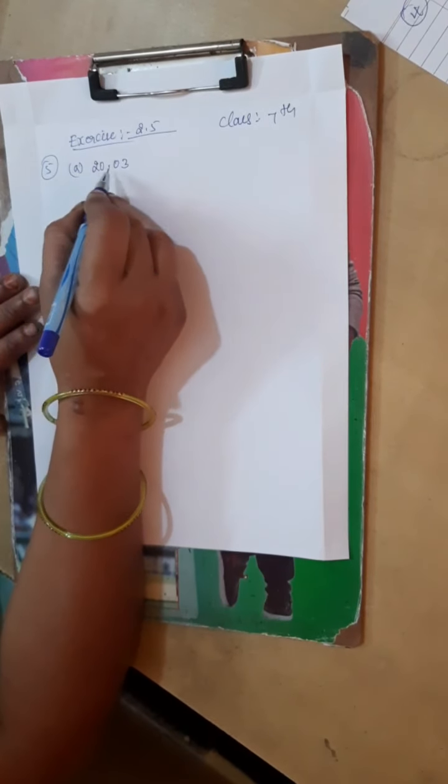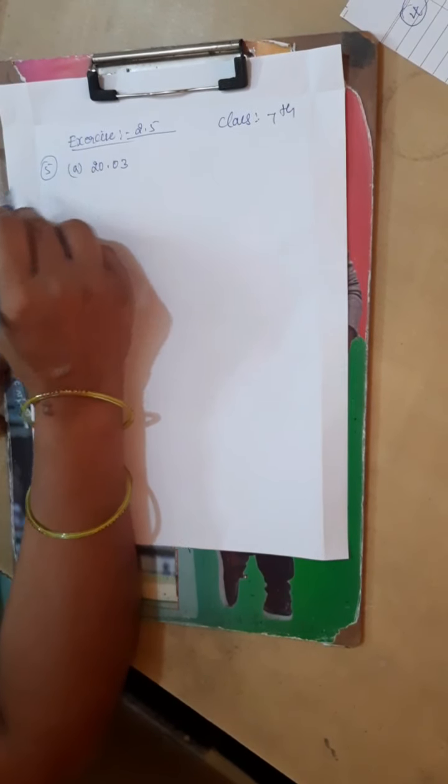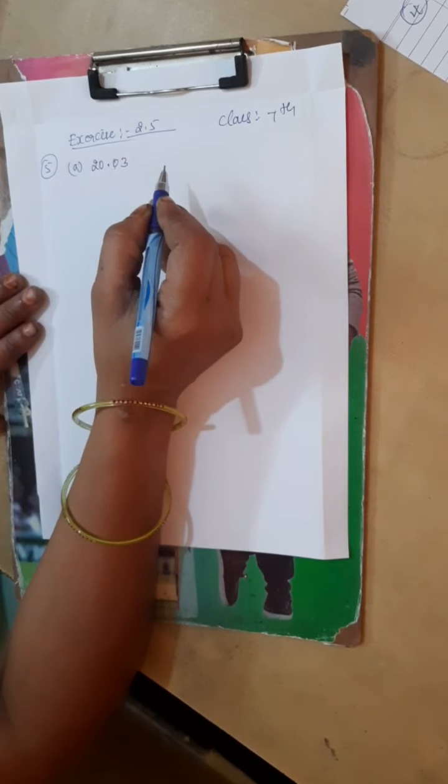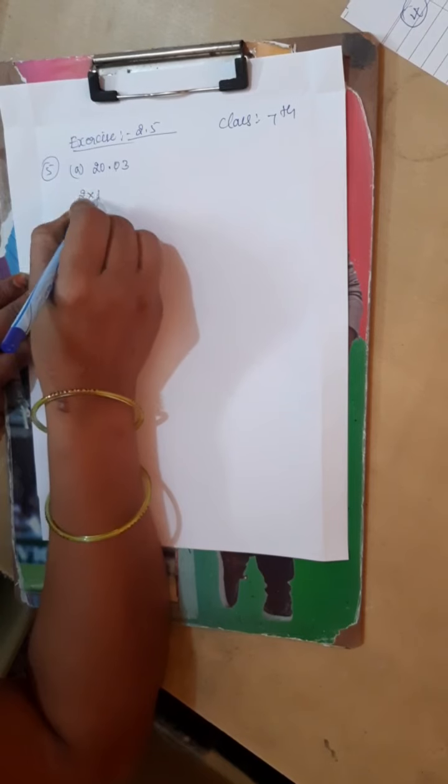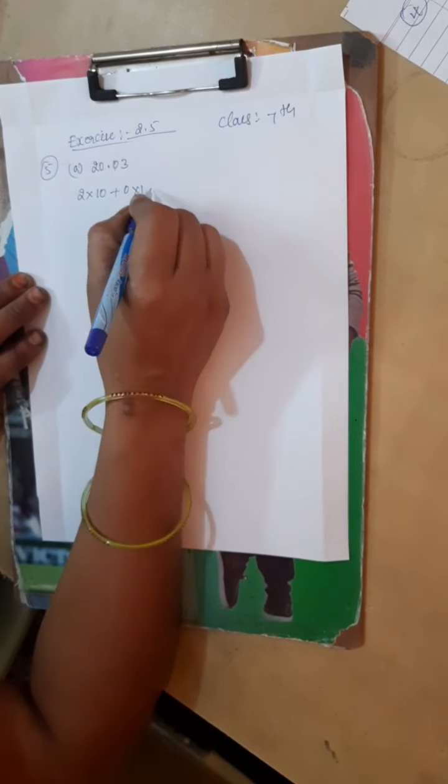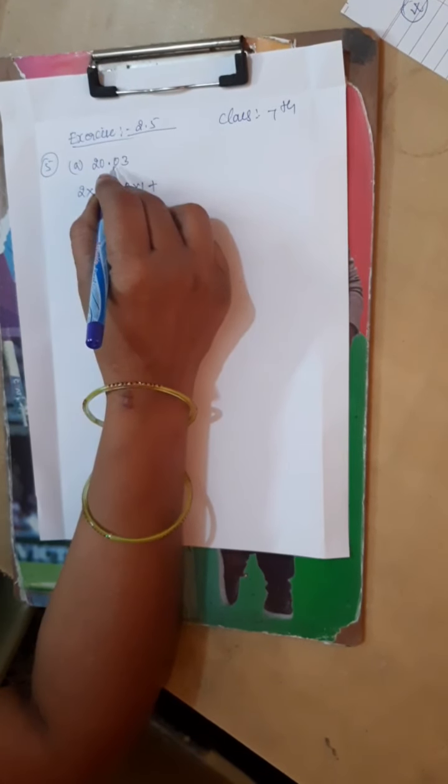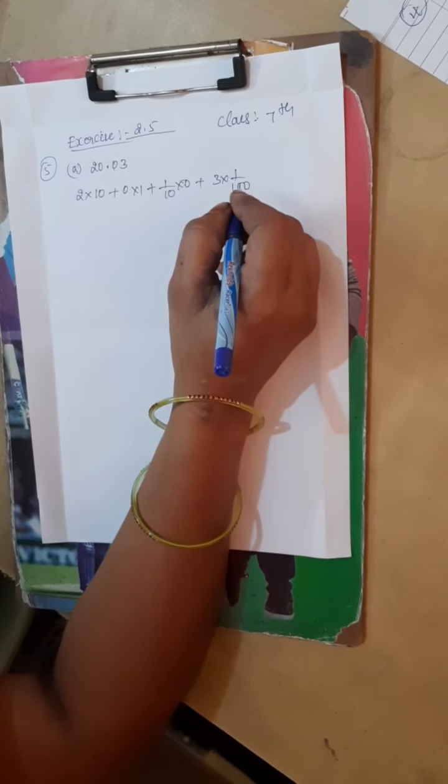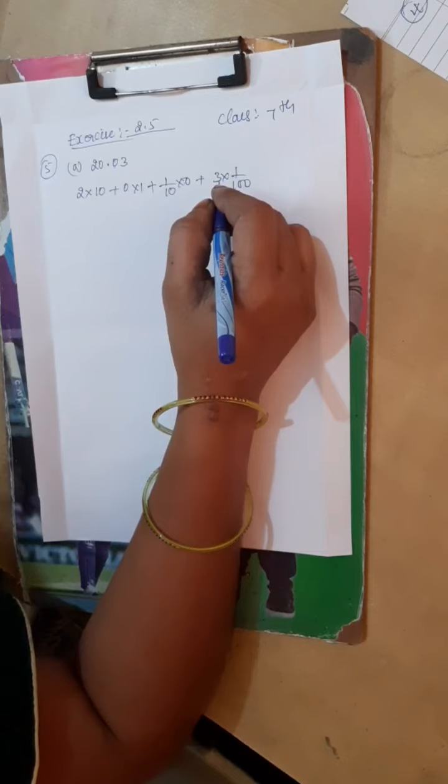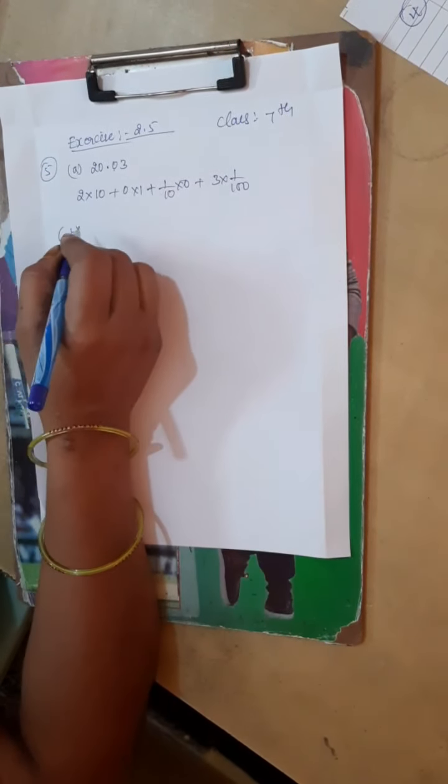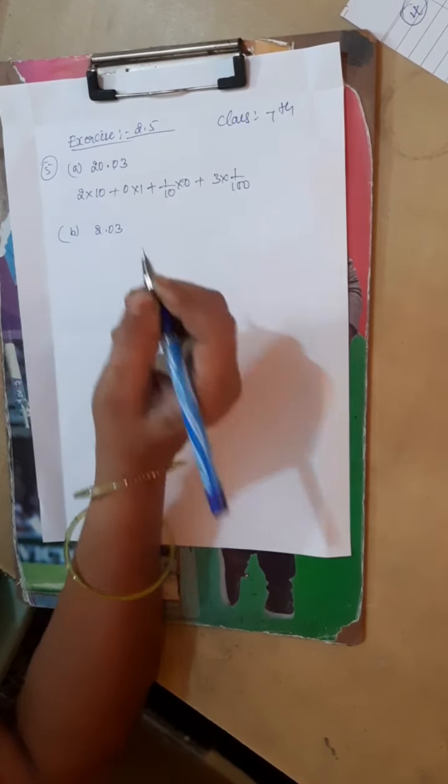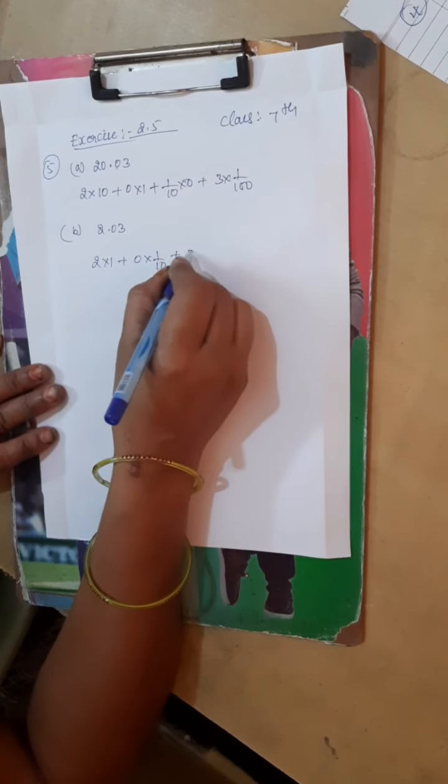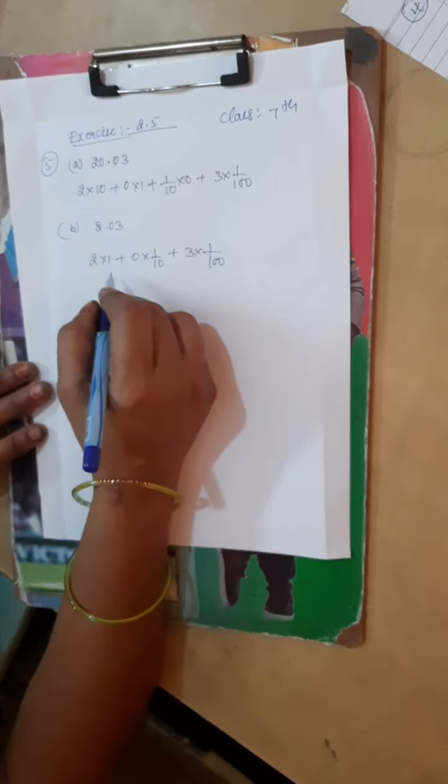Expand form number 1st main. First, 20.13. So 2 into 10 plus 0 into 1, then plus 1 into 1/10, plus 3 into 1/100. Okay, understand. Next, second question 2.03, so 2 is in units, that is 2 into 1 plus 0 into 1/10 plus 3 into 1/100. Okay understand, so this is the expanded form of decimal numbers.